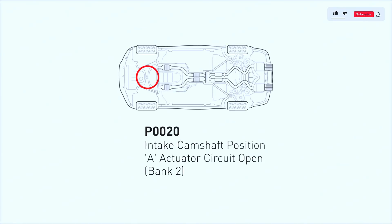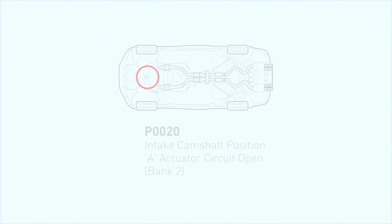The P0020 code indicates that the bank-two intake camshaft isn't synchronized with the oil control valve because of an open or faulty circuit. This problem is detected by the engine control module, which is the electrical control unit that regulates the opening and closing of the camshaft intake and exhaust valves.